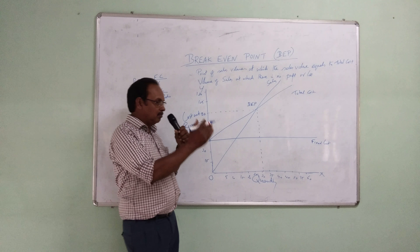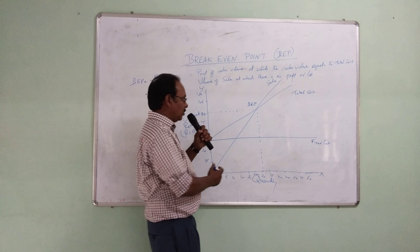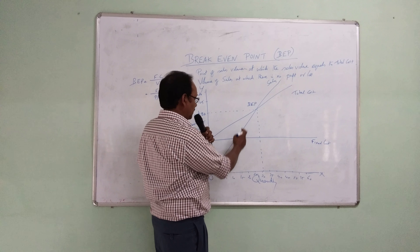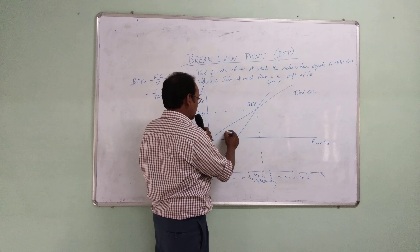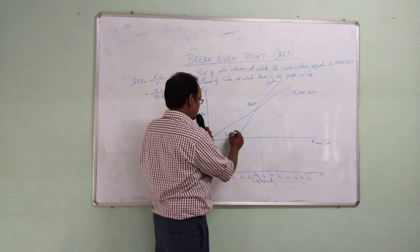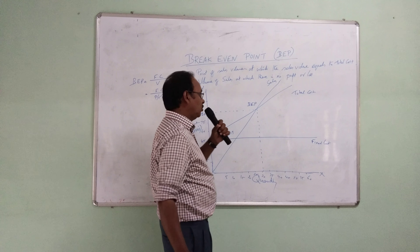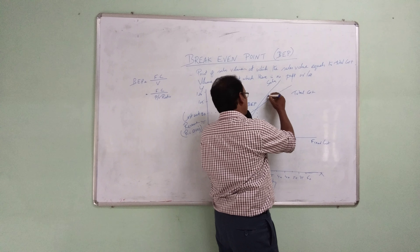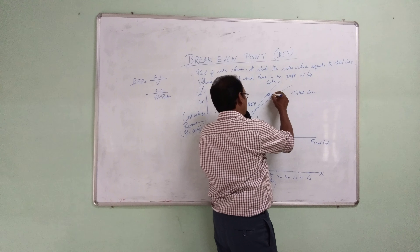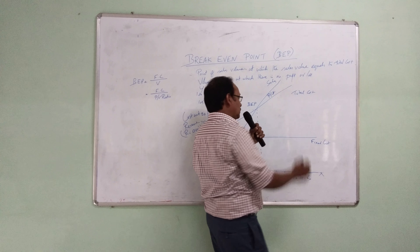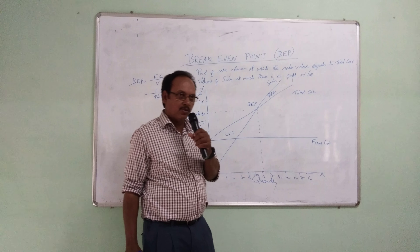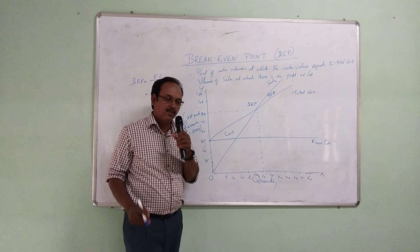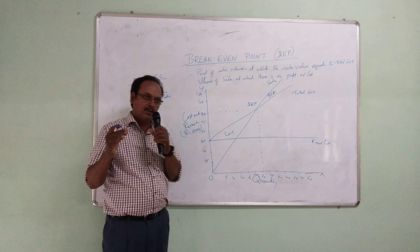Below the BEP, the company is making a loss. Above the BEP, there will be profit. So a company that wants to make profit should produce and sell above the break even point.